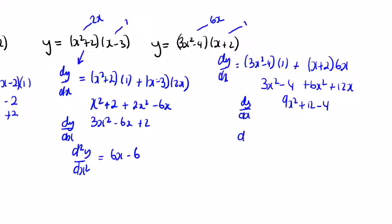So the second derivative is 18x plus 12. I left out an x there rushing — so 18x plus 12.